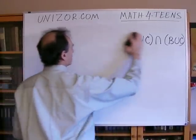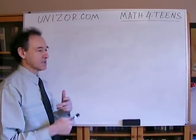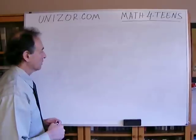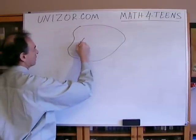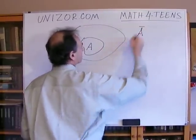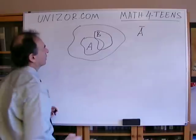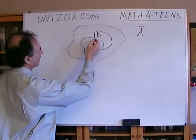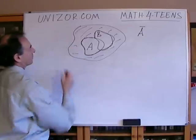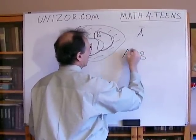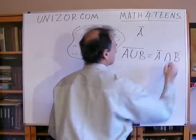Now a couple of other properties. The whole purpose of this exercise is to establish some kind of language for future studies. Another operation was a complement. If you have some big universal set and this is A, then there is the complement of A — which is everything outside of A. With two different sets A and B, I would like to examine what is the complement of A union B. A union B is everything which belongs to either A or B, and the complement is everything outside of it. The complement of A union B is the same as complement A intersection with complement B.